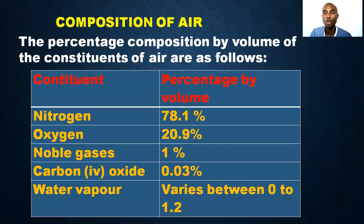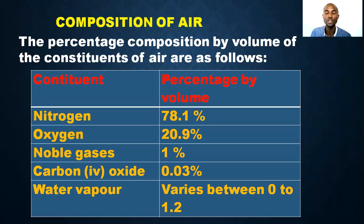What are the percentages of the components or constituents of air? The percentage composition by volume of the constituents of air are as follows: nitrogen has the highest percentage at 78.1%. Oxygen is approximately 20.9%, which we can call 21%. Noble gases account for 1%, and carbon dioxide is 0.03%.